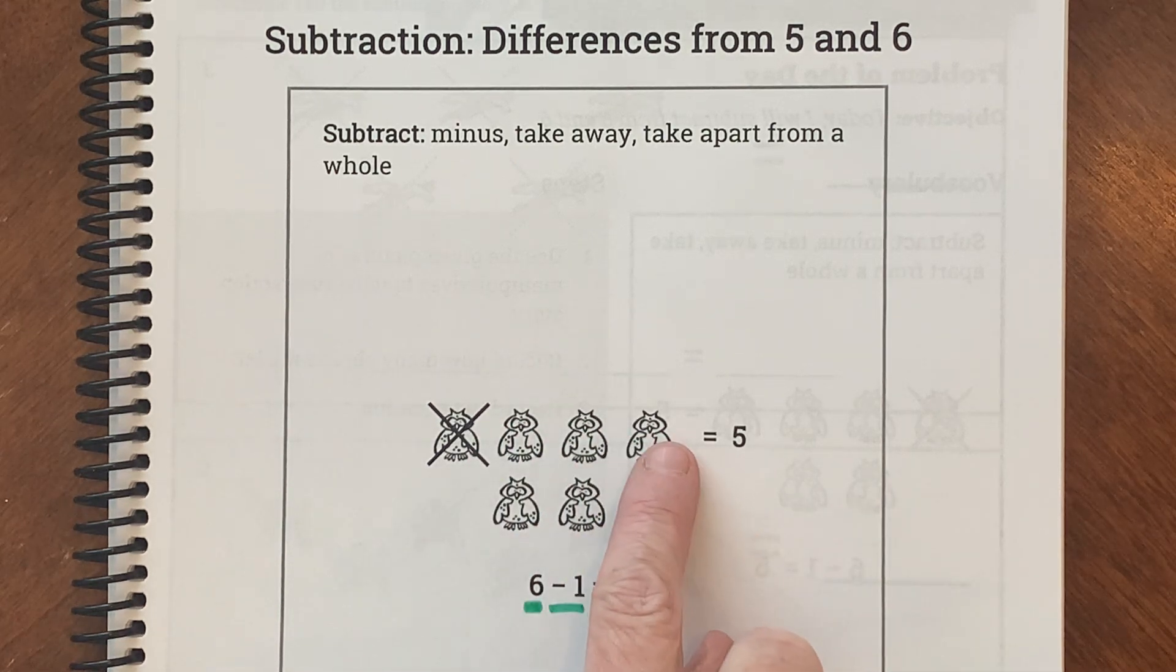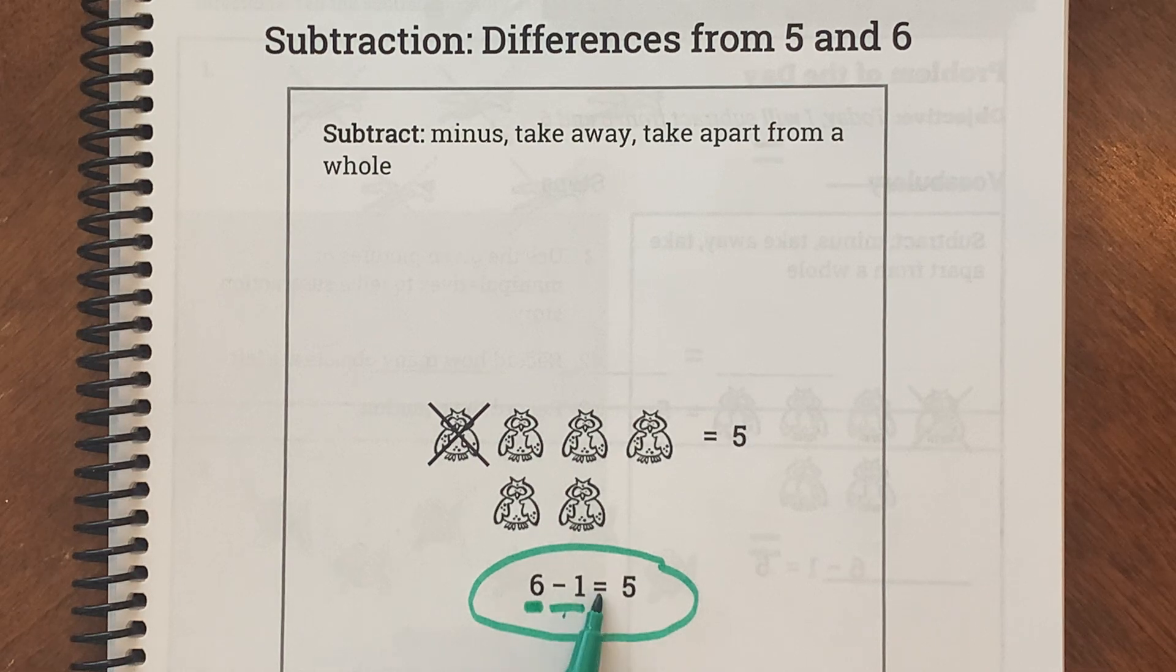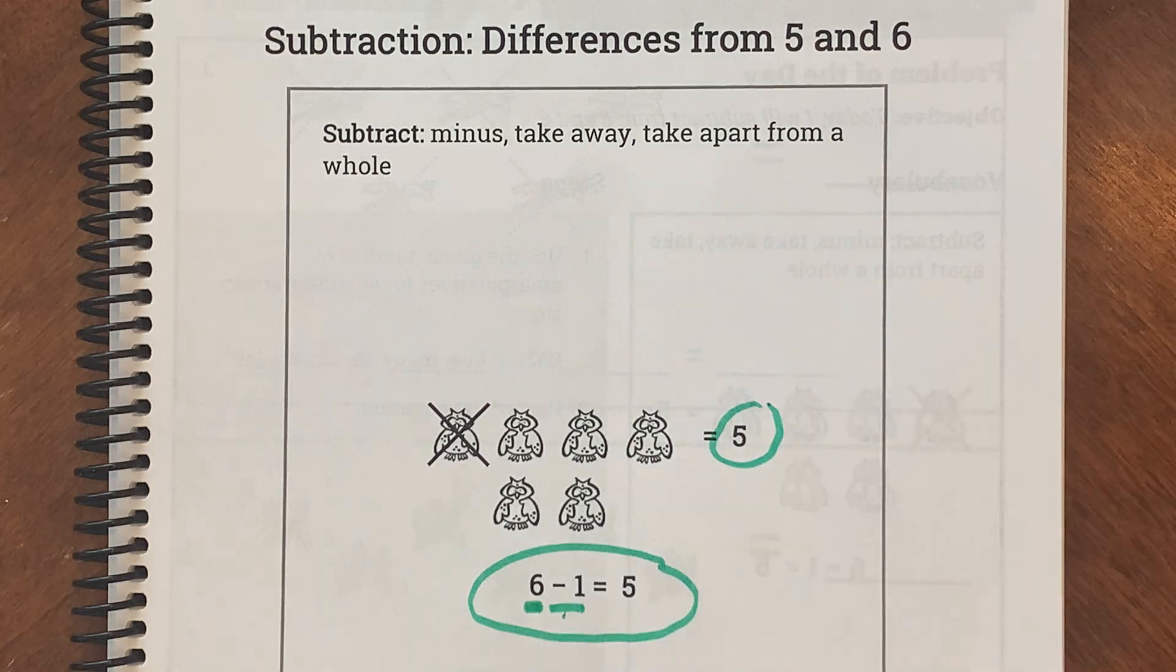So 6 owls take away 1 owl equals how many are left? Let's count them. 1, 2, 3, 4, 5 owls. So our equation says 6 owls take away 1 owl equals 5 owls. And they put the answer up there too, boys and girls.